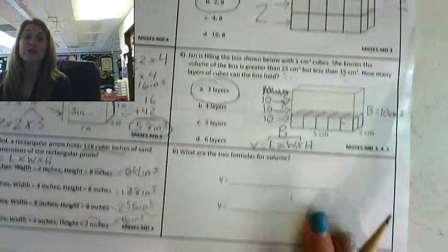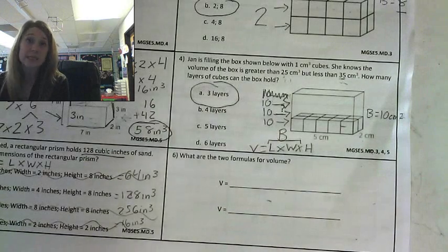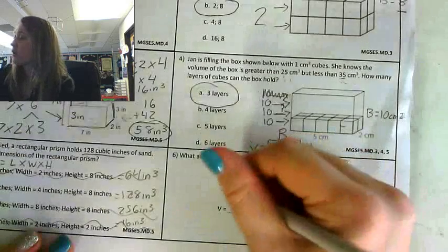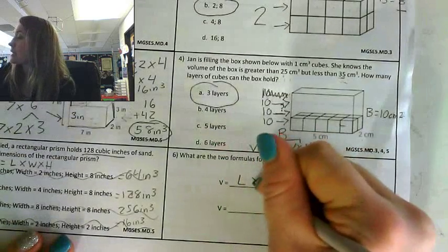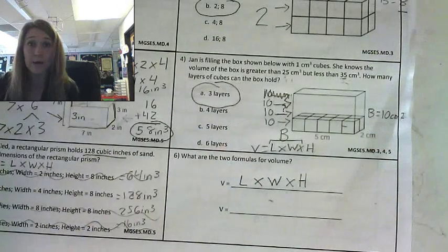And number six. What are the two formulas for volume? You should all be able to get this one. Sing your chant. V-O-L-U-M-E. Length times width times height E-Z. That one everyone should get.